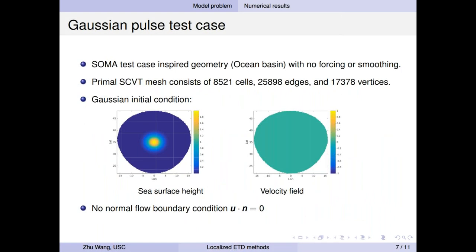Then we do a test. This test is inspired by SOMA, but we only use its geometry, and we don't consider any forcing or smoothing. So we use the ACEtity mesh. And here, these two plots just show you the initial conditions. The left one is the sea surface height, which is based on Gaussian function. Then the right is zero velocity field. But on the boundary, we use no normal flow conditions.